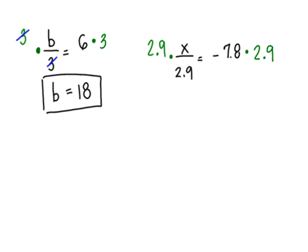A 2.9 in the top and a 2.9 in the bottom would cancel out, leaving you with an x. But on the right hand side, I have to multiply negative 7.8 times 2.9.